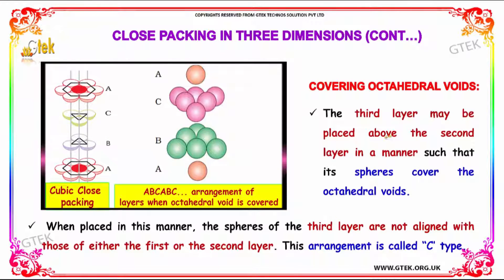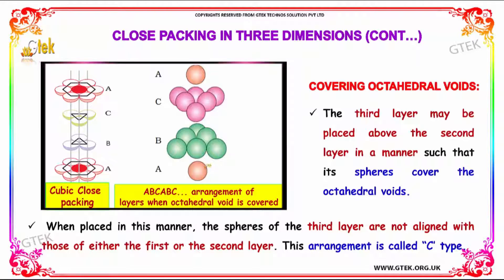The third layer may also be placed above the second layer in a manner such that its spheres cover the octahedral voids. The arrangement is then A, B, C — the pattern is different. When placed in this manner, the spheres of the third layer are not aligned with those of either the first or second layers, and this arrangement is called C-type.